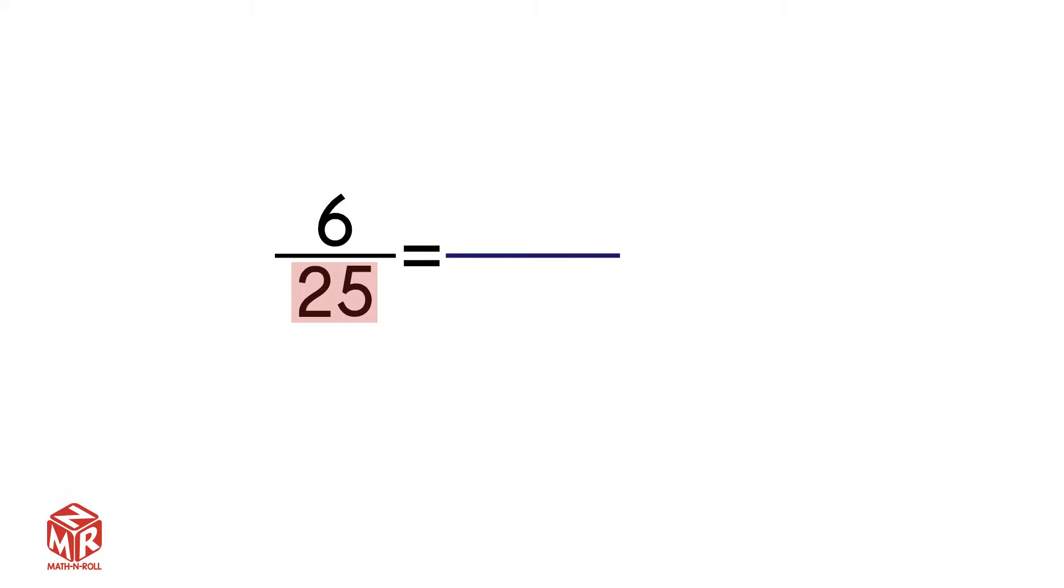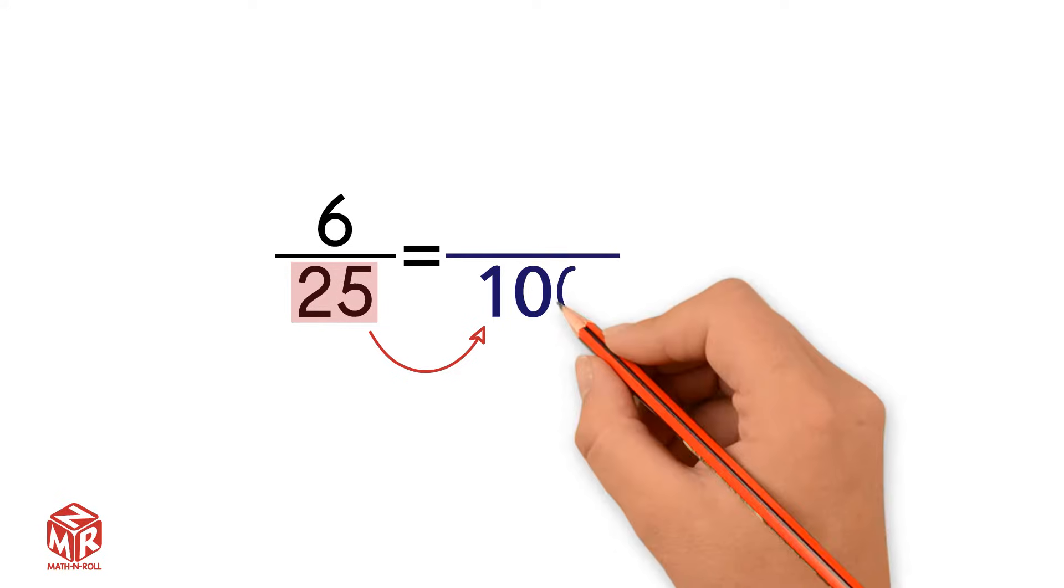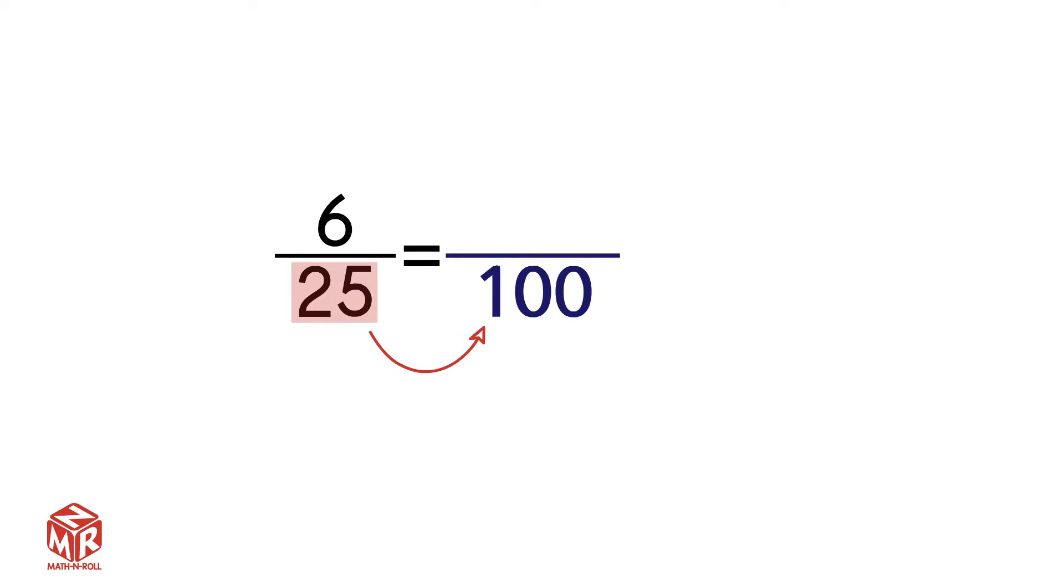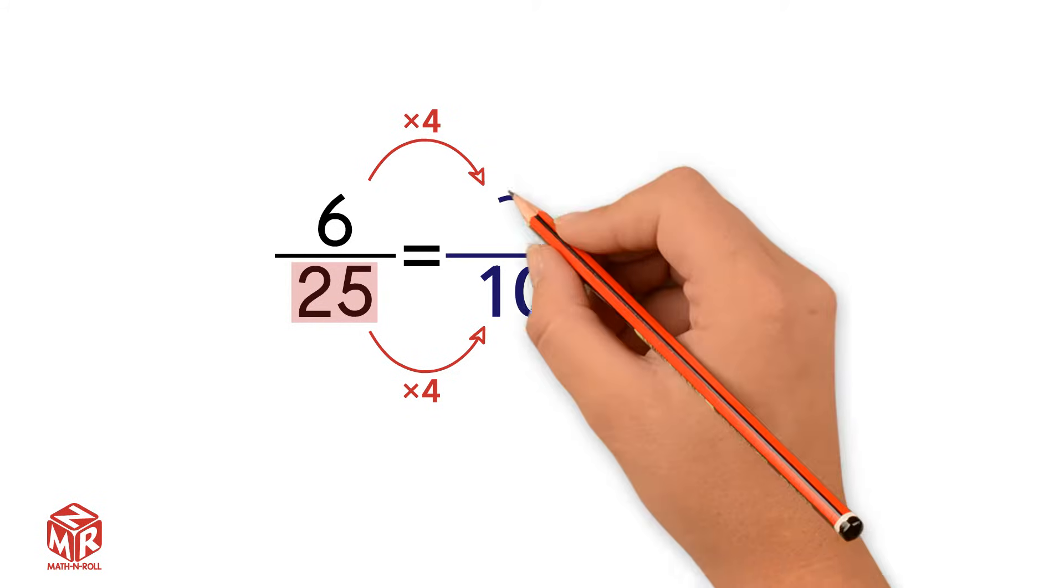Can we make the denominator a 10? No, because you can't multiply 25 by a whole number to get 10. Let's try 100. We can multiply 25 by 4 to get 100. So 100 works as a denominator. Don't forget to multiply the numerator by 4 as well. Now we have a numerator of 24.